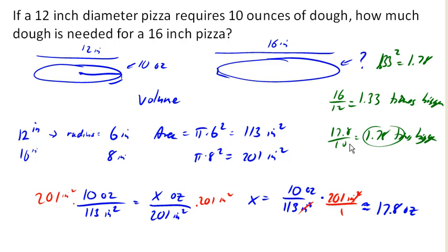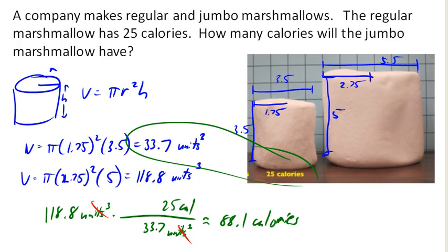Likewise here, the diameter and height are about 1.5 times bigger from the small marshmallow to the big one. But the calories end up being about 3.375 times larger.